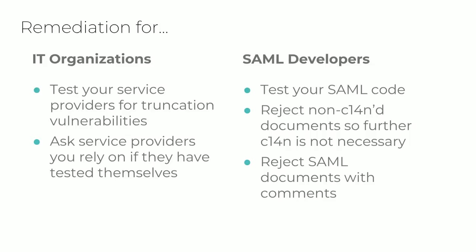Before getting into IDP exploitability, I'd like to cover remediation for the truncation vulnerability. Identifying a vulnerable system and the remediation process depends on your relationship with the service provider. If you manage or administer service providers, your best options are asking the service provider if they're vulnerable, or spinning up a browser proxy and testing things yourself — with permission. If someone in your organization has written a SAML service provider, I'd recommend the weaponized unit test strategy. There are also other mitigation strategies such as rejecting SAML documents that are non-canonical or rejecting any SAML document that contains a comment, though practicality depends on your context.